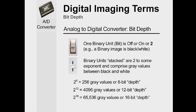If you don't understand the term bit depth, here's a short explanation. In a camera, you have an A-to-D converter — an analog-to-digital converter — that takes the electrical signals created when photons hit detectors and turns them into numbers assigned to pixels in your image. One binary unit is off or on, just like a light switch, so it's called a binary image: either black or white. If you stack those binary units, they are 2 to some exponent, and they comprise gray values between black and white. So 2 to the 8th would be 256 gray values, or what's called an 8-bit bit depth.